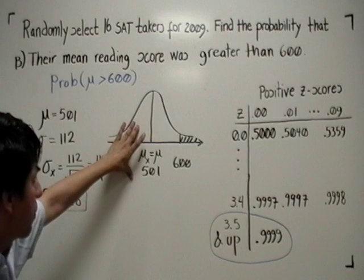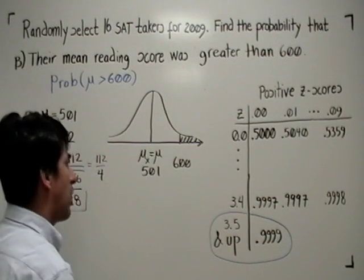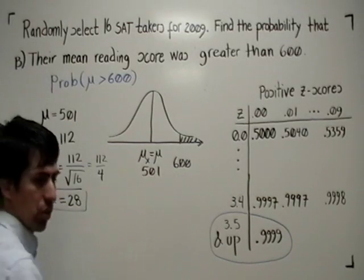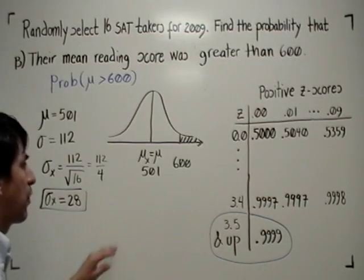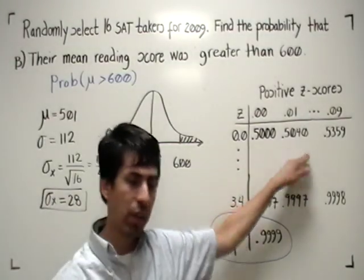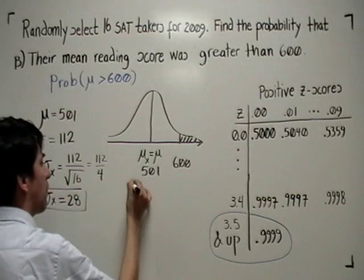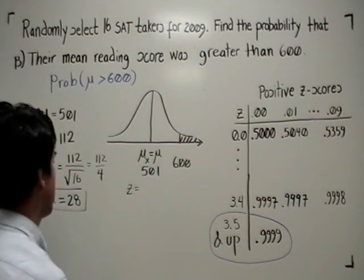So now we have a normal distribution. What's the probability that the variable is greater than 600? We recall that we have to convert this into a standardized normal distribution for the purpose of using our z-scores table.